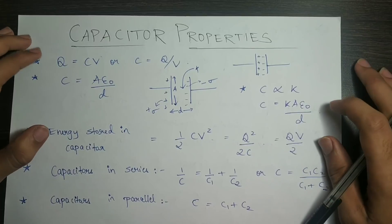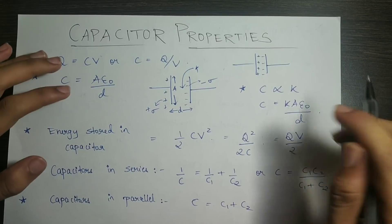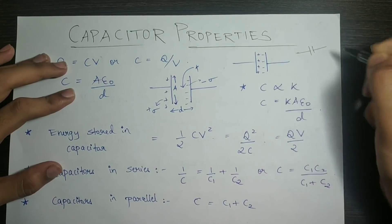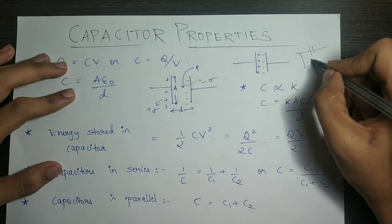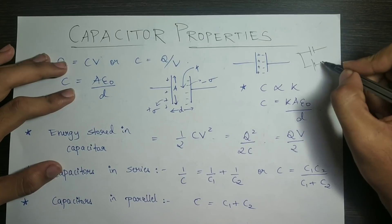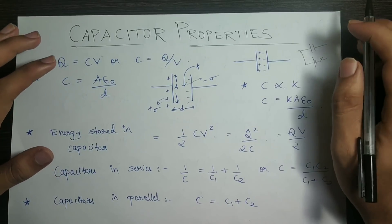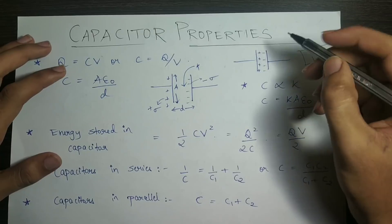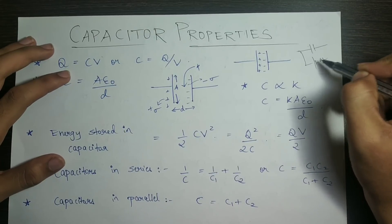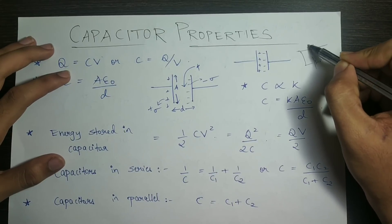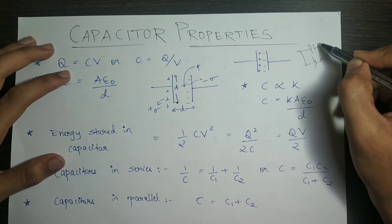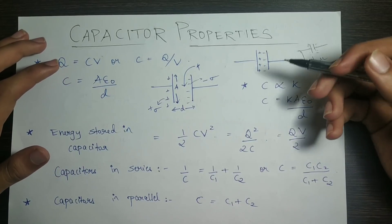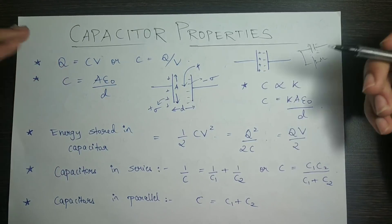A capacitor is something that stores charge. It has a symbol used in circuits. When voltage is applied in a circuit, one plate is positive and one is negative, and an electric field is created. It happens with every type of electric field.